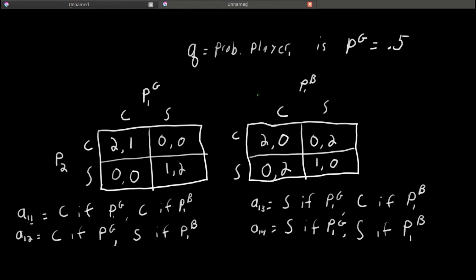Again, a Nash equilibrium, what we'll call a Bayesian Nash equilibrium of this game, is an action of player 1 and player 2.